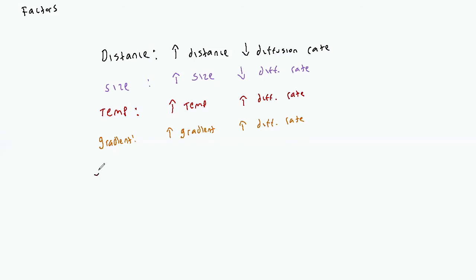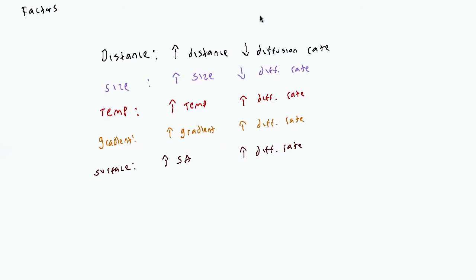Next we have surface area - the amount of space available on the surface of an environment. The greater the surface area, the greater the diffusion rate, because there are more places for the molecule to diffuse through. Keep in mind that osmosis is H2O movement in the presence of non-penetrating solutes - those solutes don't move so much, so water has to because there's a difference in solute concentration between environments. Diffusion, though, is movement of specific solutes from one environment to the other. With osmosis, the solutes don't matter, just the difference of non-penetrating solutes on each side. With diffusion, it is solute specific.